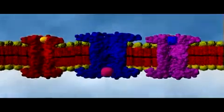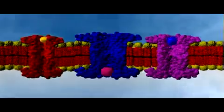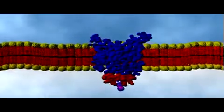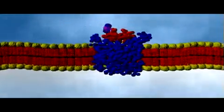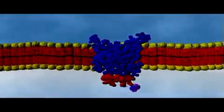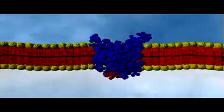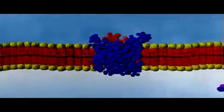In the process of facilitated diffusion, either channel proteins or carrier proteins facilitate the crossing of a cellular membrane by water-soluble substances such as sodium, potassium, and calcium ions, amino acids, and monosaccharides, which cannot typically diffuse through the membrane.